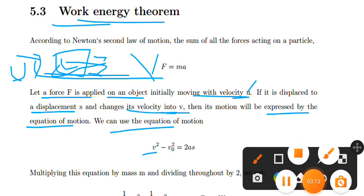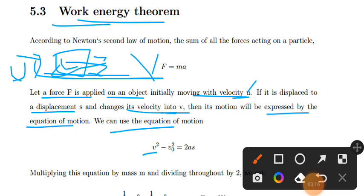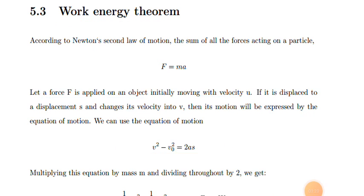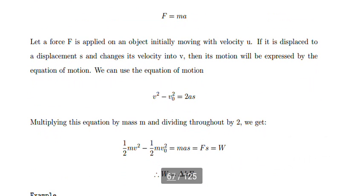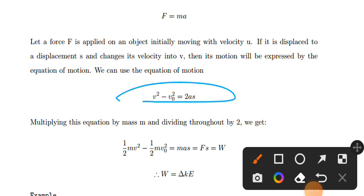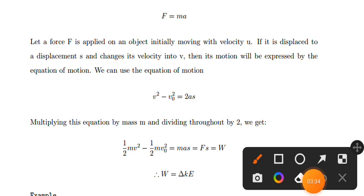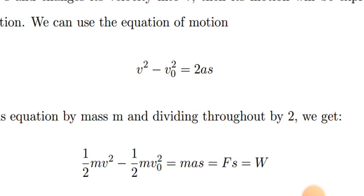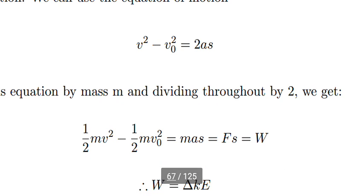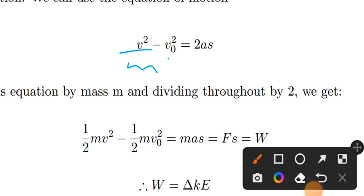The equation of motion gives us: v squared minus v-naught squared equals 2as. This is the equation of motion. Now, dividing both sides and multiplying by the mass, we work with the mass on both sides of the equation.